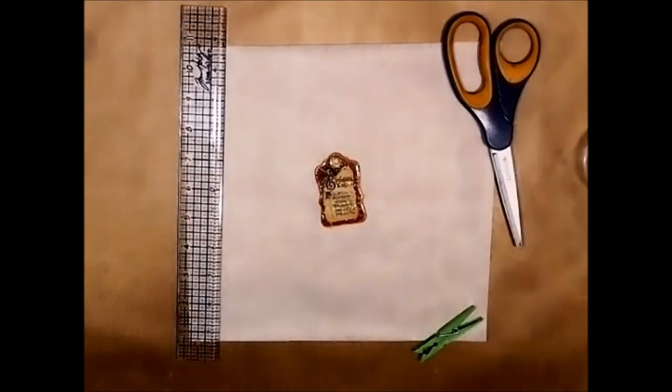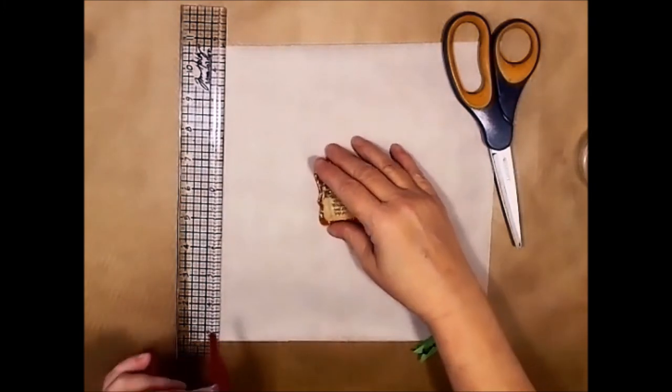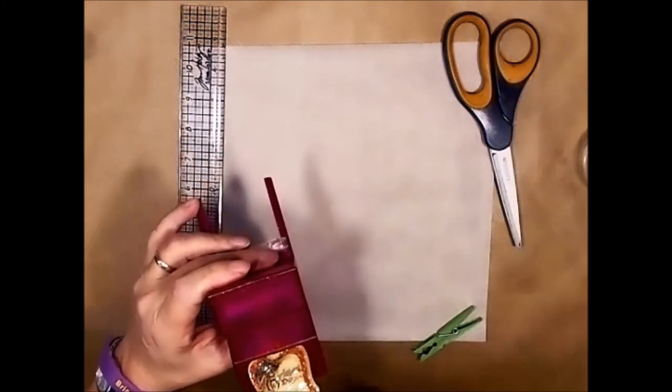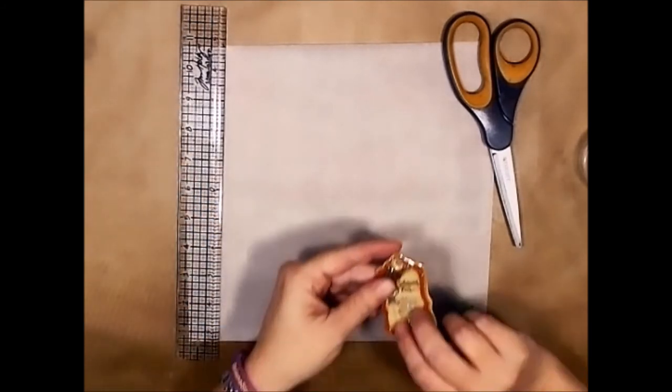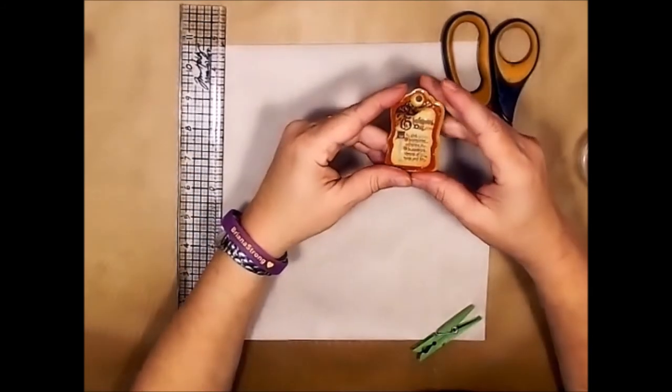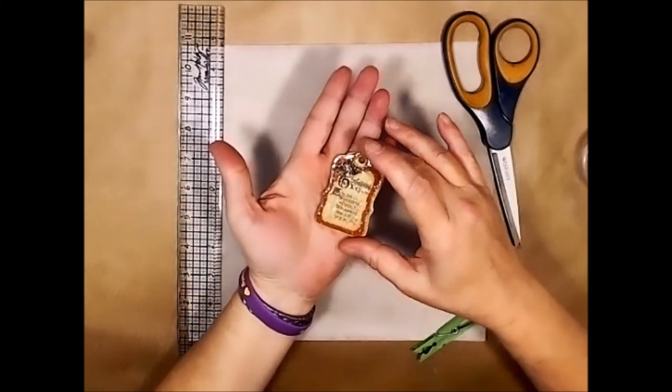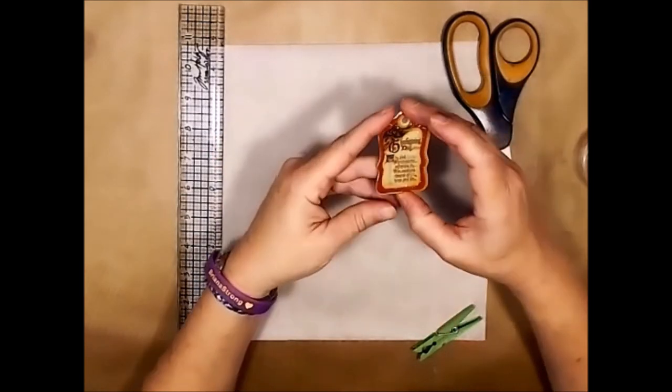And this is small enough that you could actually run it through a, as a matter of fact let me do that. I've got one right here. This should run through a Zyron. I don't think it's too thick. This is my permanent one. Ah, it's too wide. Alright, my other Zyron is packed away in the other room. But you can run this through the bigger Zyron and then make a sticker out of it.